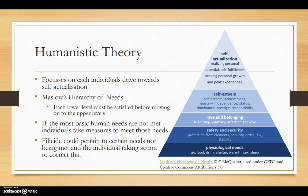Filicide motivation could be explained by lower needs such as safety needs not being met. The parent would feel as though they did not have the resources or capacity to love and nurture a child. This is also suggested by research that has indicated poverty and low education as risk factors for filicide.